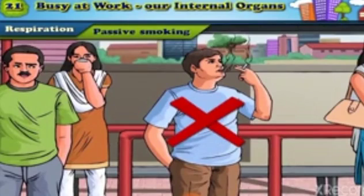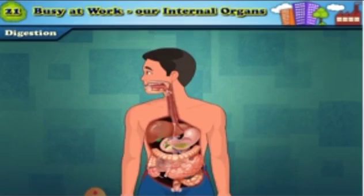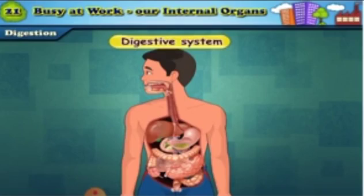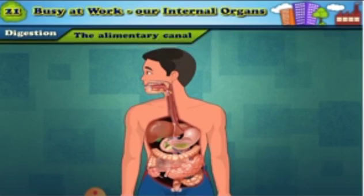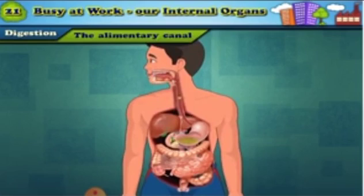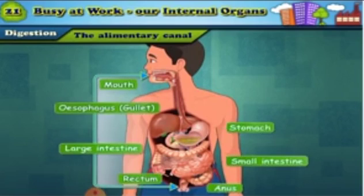Now let us first understand the process of digestion. The food gets digested in the digestive system. The food that we eat is digested in the body, and this process takes place in the different parts of a very long flexible tube inside our body. This tube is called the alimentary canal.